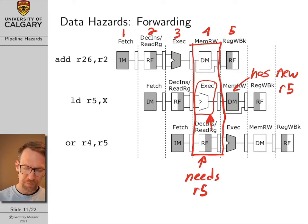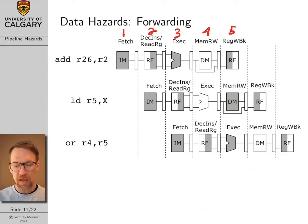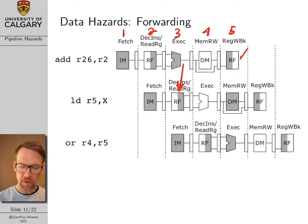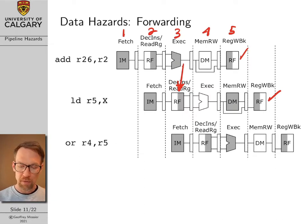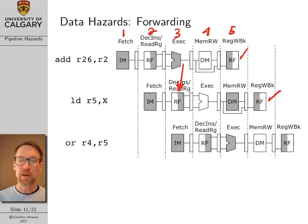The benefit we saw was we were able to get rid of our first hazard without any penalty in throughput — by forwarding R26 plus R2 down to the load command, we had our add command come out of clock cycle 5 and load come out of clock cycle 6 with no throughput penalty. However, we weren't able to solve our second hazard with forwarding alone. To be both as efficient as possible and robust, we need to combine forwarding and stalling together.